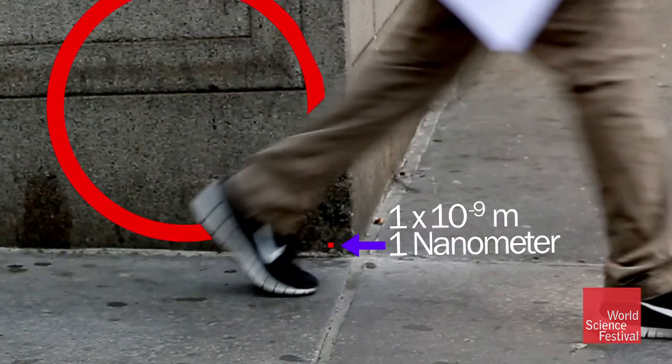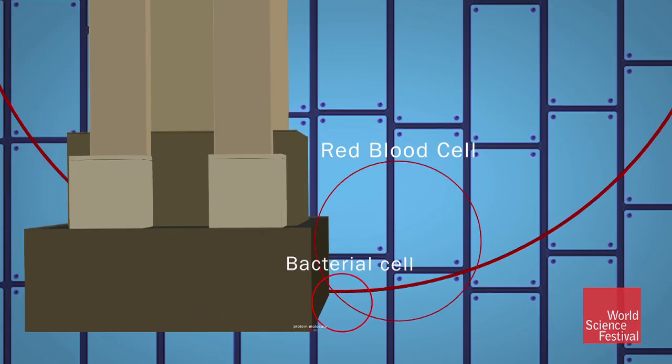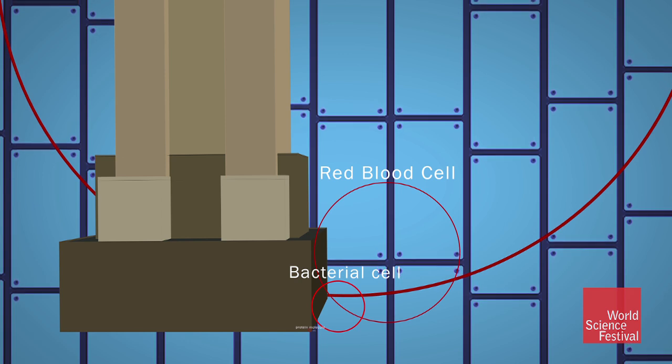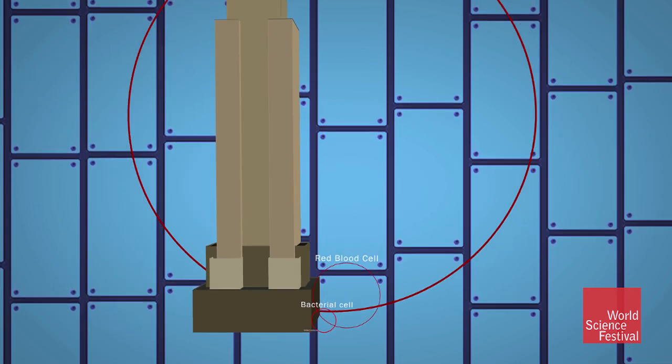And a nanometer? On our Empire State scale, it's less than a quarter of an inch. That's about the size of five microscopic atoms placed end-to-end.